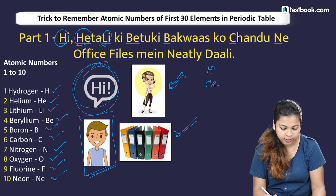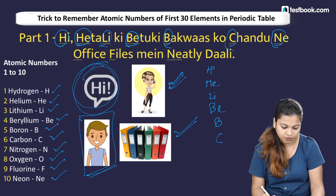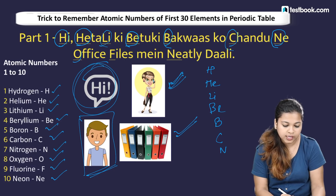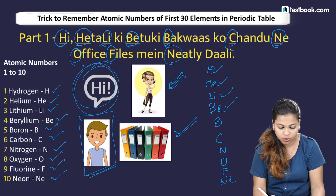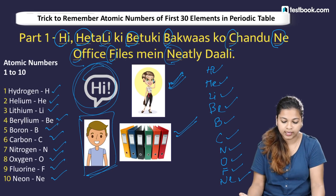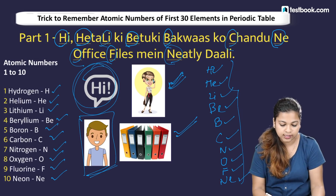The mnemonic sentence for elements 1–10 is: 'Hi, Heta Li ki betukey bakwas, Chandu ne office files mein neatly dali.' Here: Hi = H for hydrogen, He = helium, Li (Heta Li) = lithium, Be (betukey) = beryllium, B (bakwas) = boron, C (Chandu) = carbon, N (ne) = nitrogen, O (office) = oxygen, F (files) = fluorine, and NE (neatly) = neon.